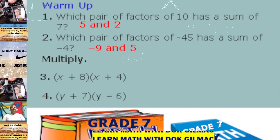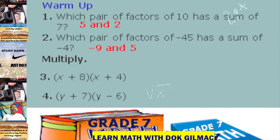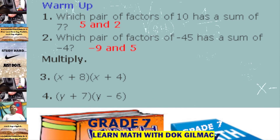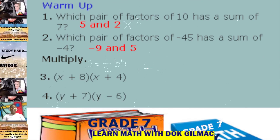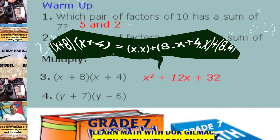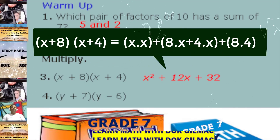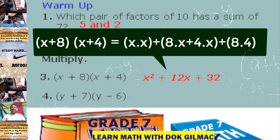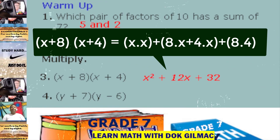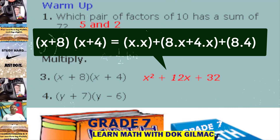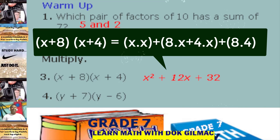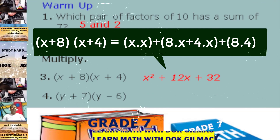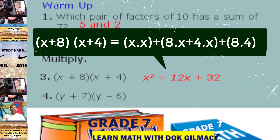Number 3. Multiply x plus 8 and x plus 4. That's right, we have x squared plus 12x plus 32. Since x times x is x squared, x times 4 is 4x, plus 8 times x is 8x — get the sum, we have 12x. And 8 times 4 is 32.